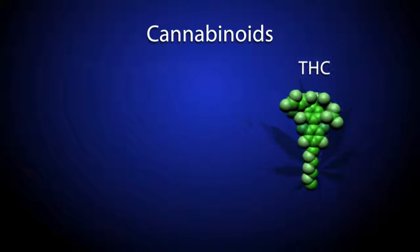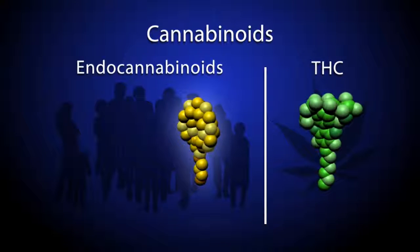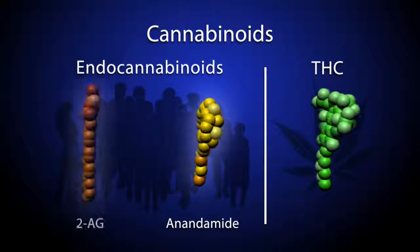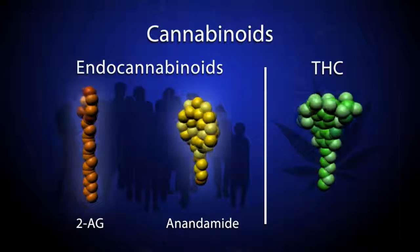Because THC is so similar to the brain's own endocannabinoids, such as anandamide or 2-AG, smoking marijuana directly affects the brain of the user.